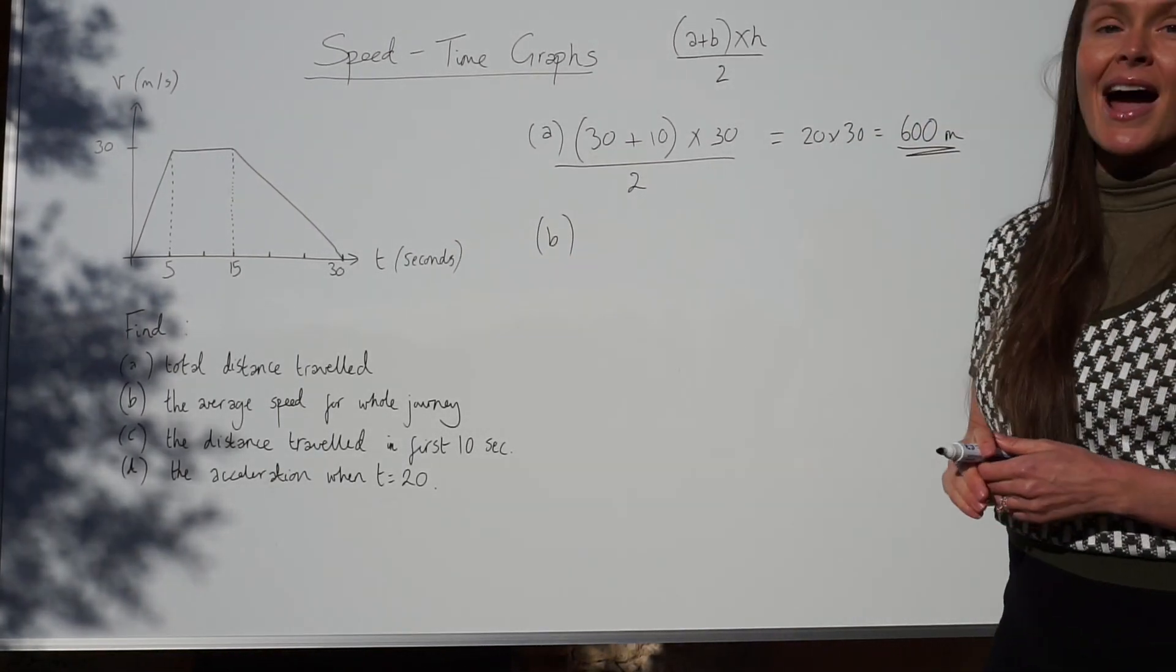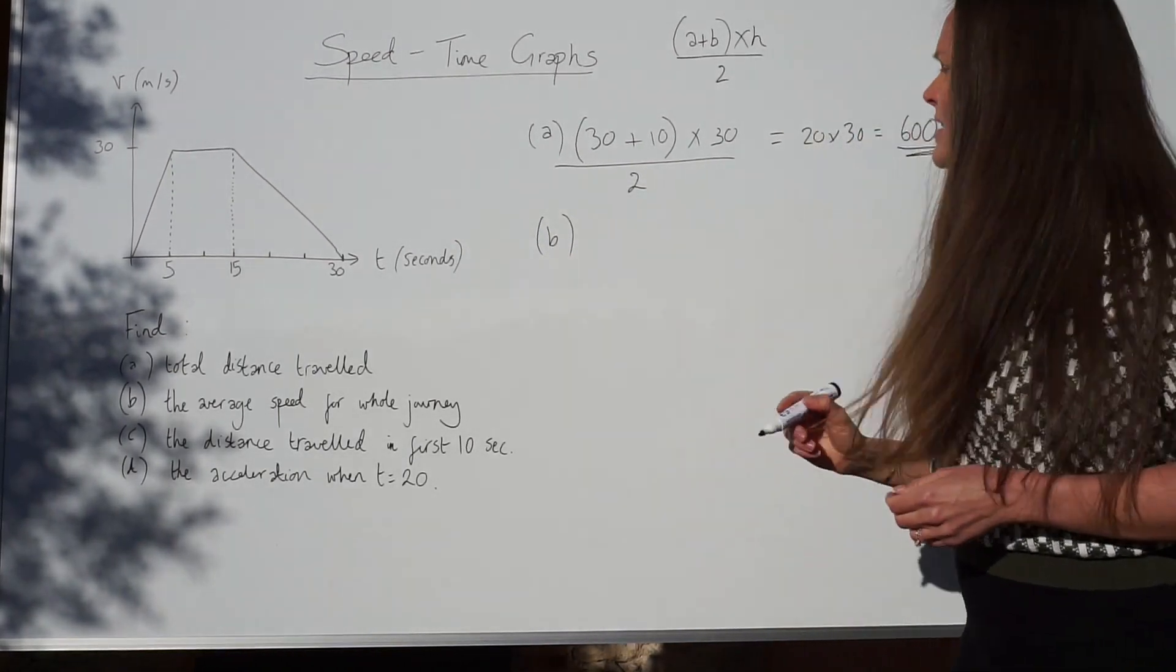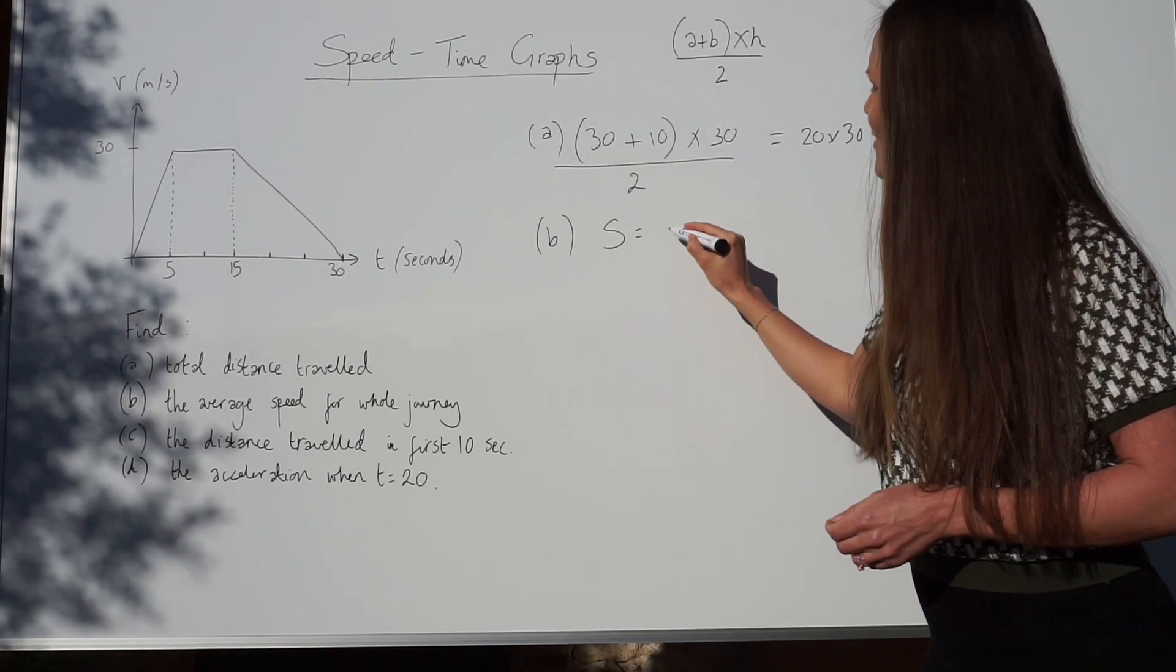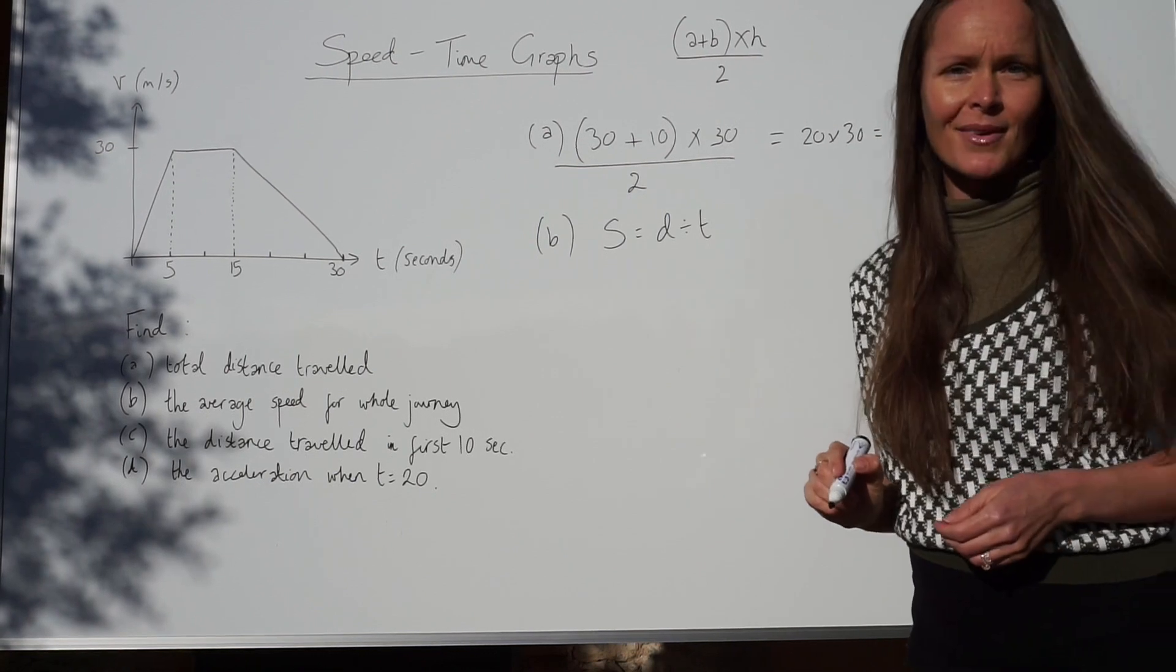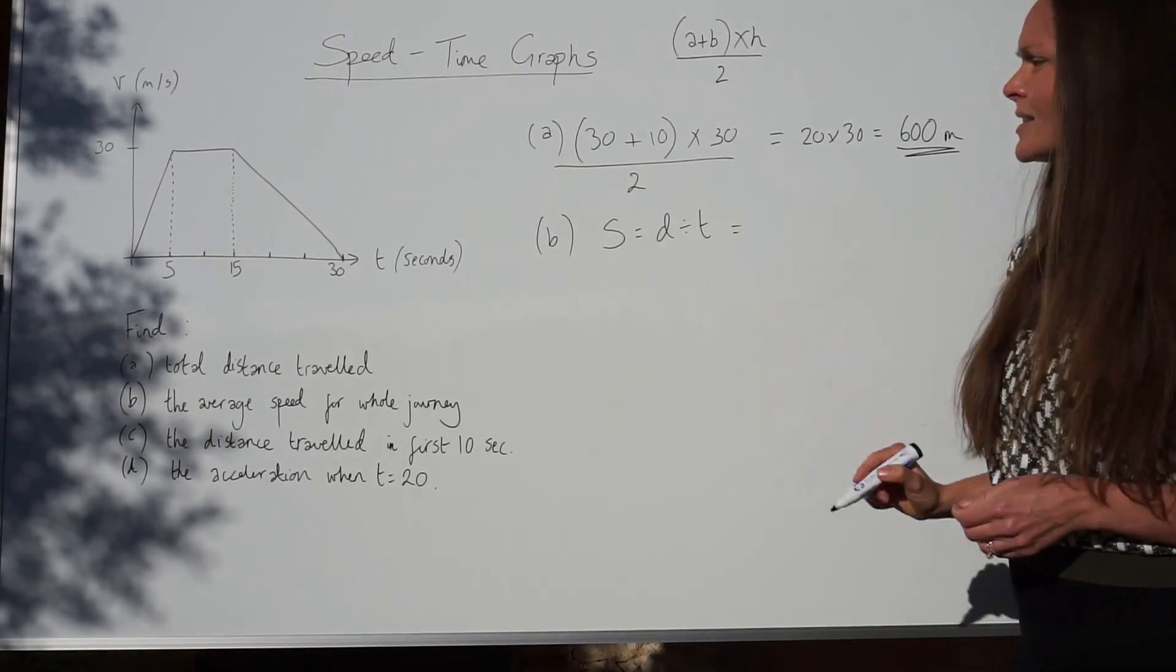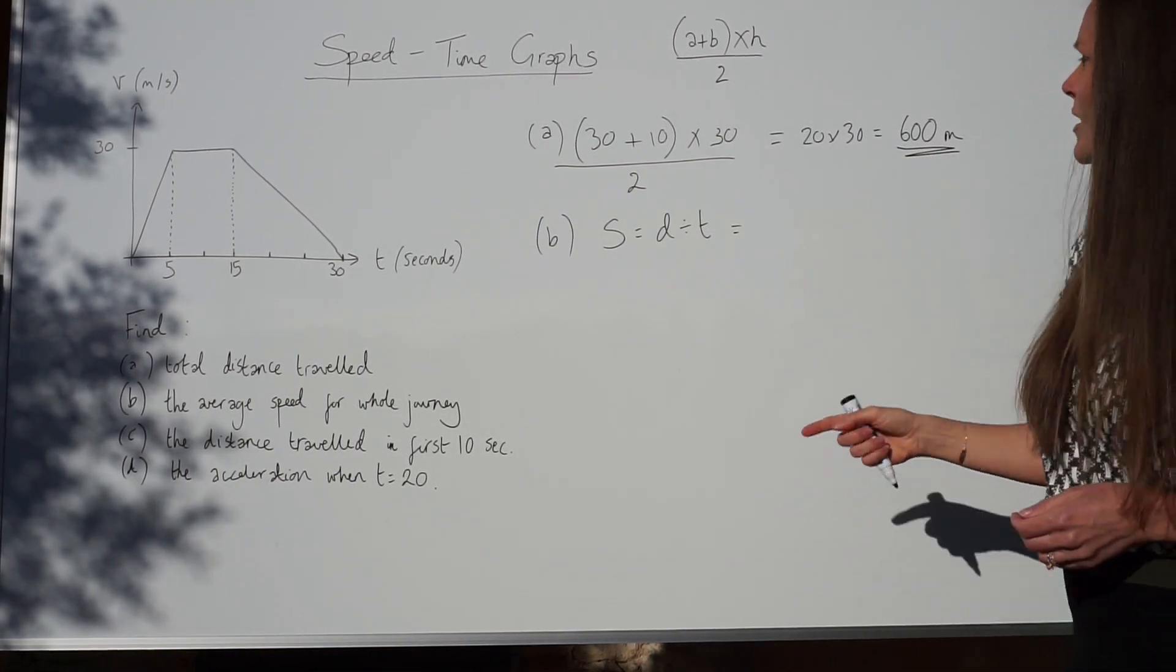Now we have to work out the average speed for the whole journey. If you know your formulas, you should know that speed equals distance divided by time. We just worked out the total distance travelled. It was 600.